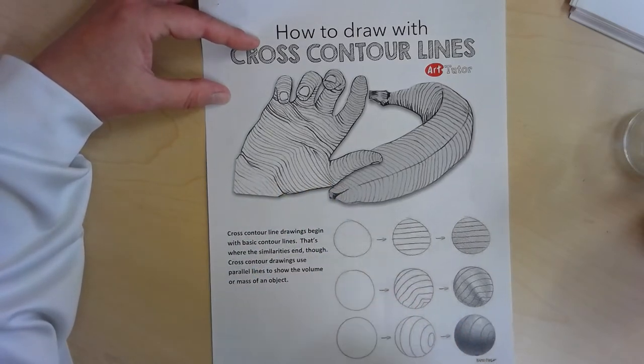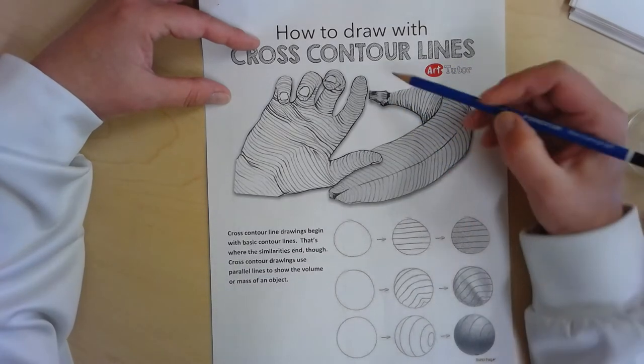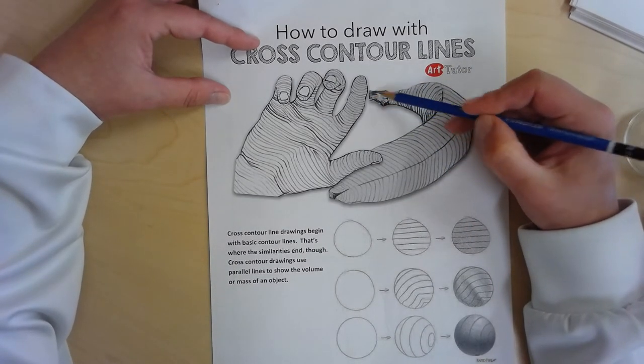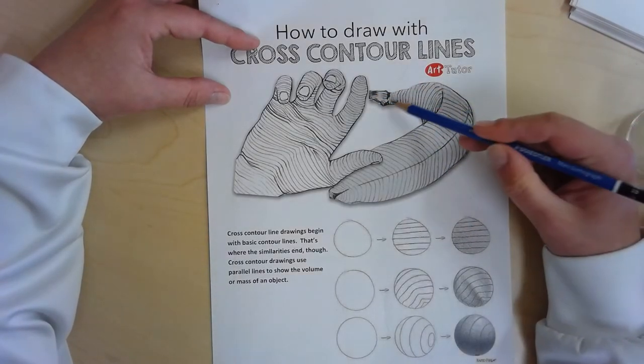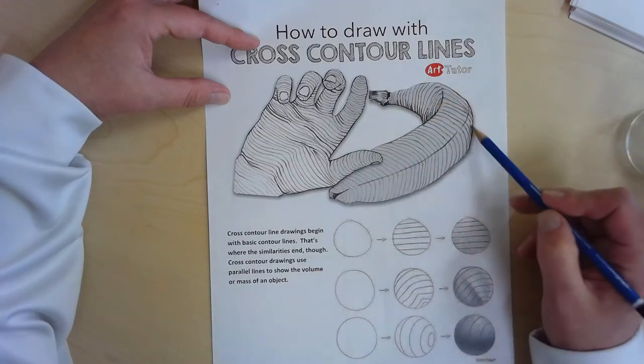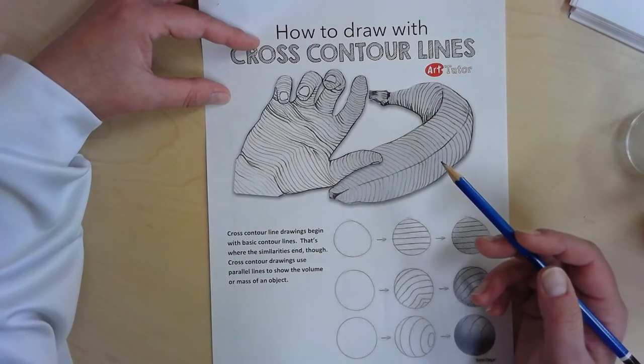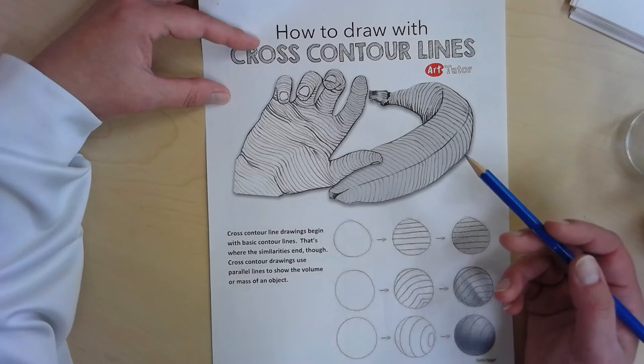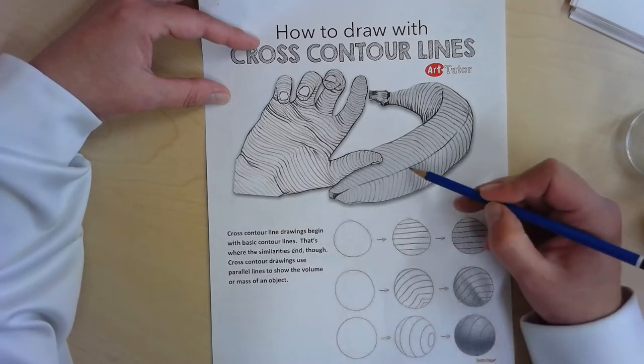the mass or the volume of something. So like this banana, for example, it starts out as a contour line drawing, just the outline, but then it looks really flat like a cartoon. By adding cross contour lines which are parallel to each other,